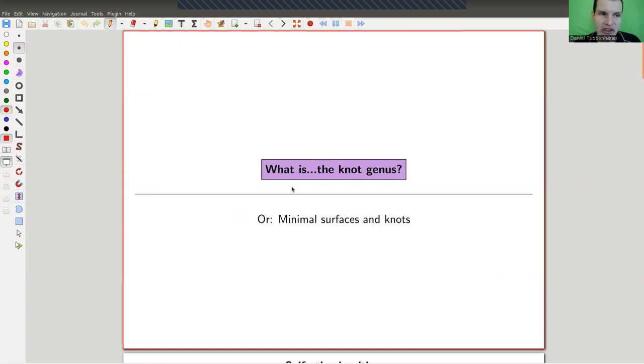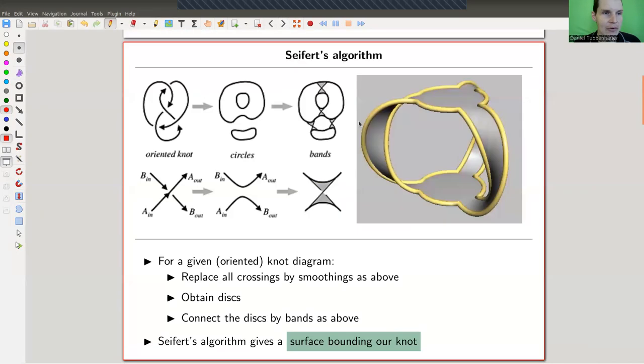So a geometrically defined invariant in contrast to the colorability or the Conway polynomial. It's called the knot genus. It's really cool. It's related to minimal surfaces and knots and I will show you a really cool YouTube video linked in the description. Okay, so let's have a look.